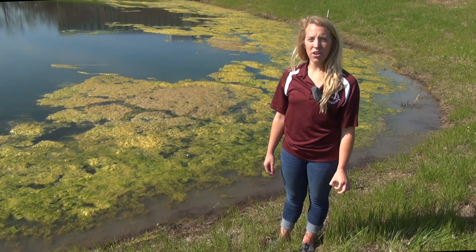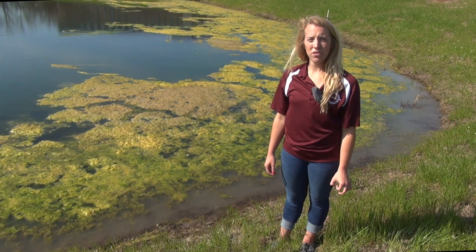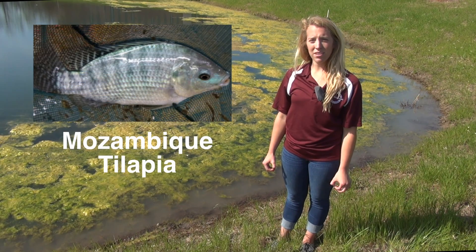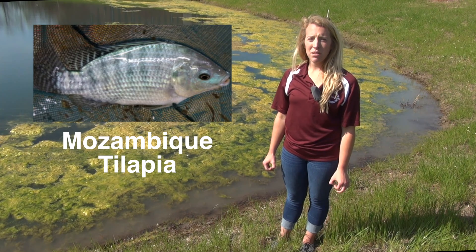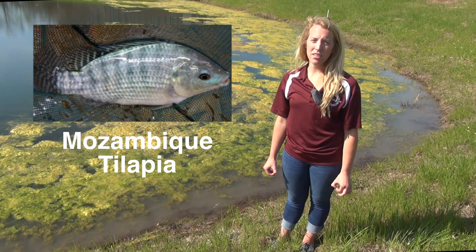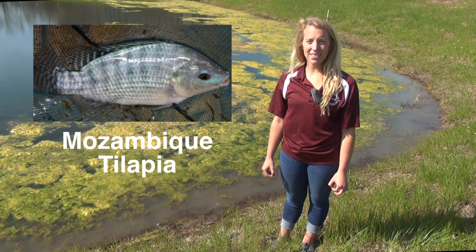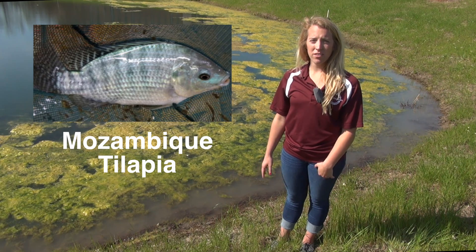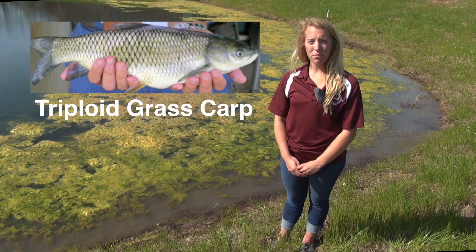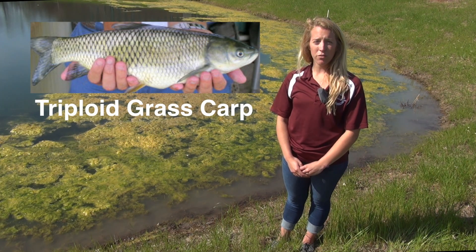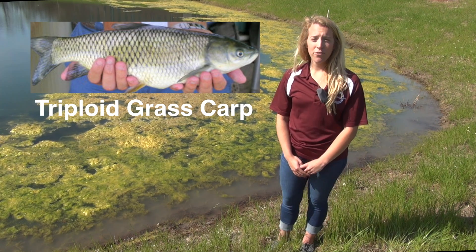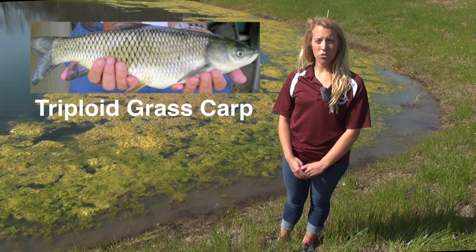Biological controls for macroalgae and filamentous algae include Mozambique tilapia and triploid grass carp. Mozambique tilapia will consume some filamentous algae and some macroalgae, such as Nitella, but typically provide limited, if any, control. Additionally, as a warm water species, Mozambique tilapia cannot survive in temperatures less than 55 degrees Fahrenheit, so in all but far southern Texas climates, they must be restocked each spring. Triploid grass carp will eat filamentous algae, but because it is not a preferred food item, they will consume other types of submerged vegetation before filamentous algae. Therefore, they are not typically a reliable control for filamentous algae.